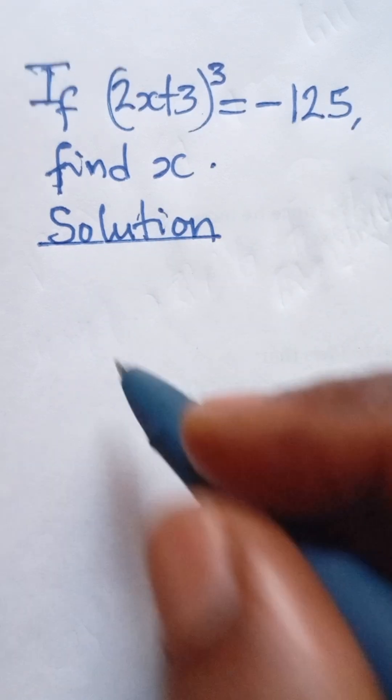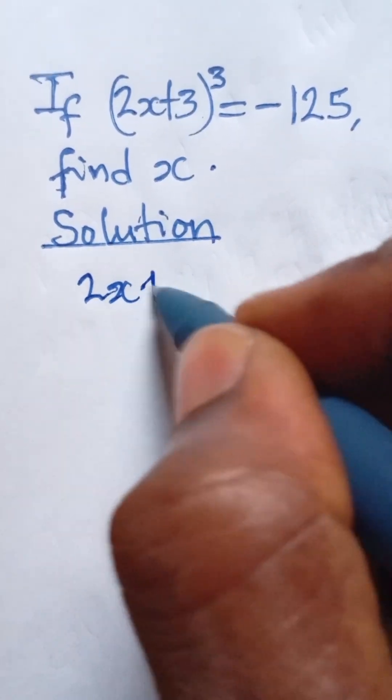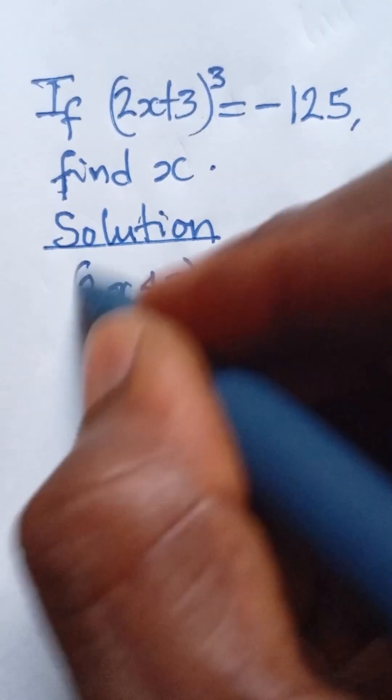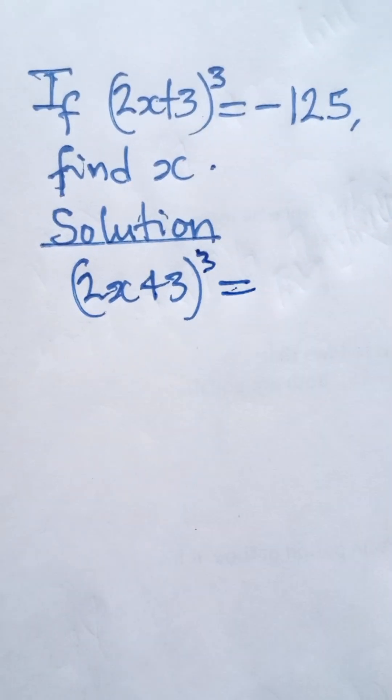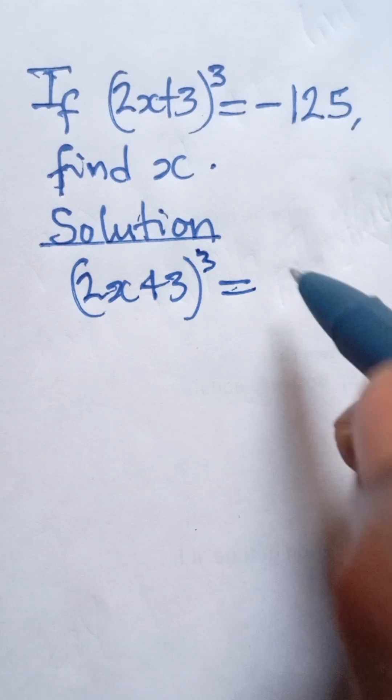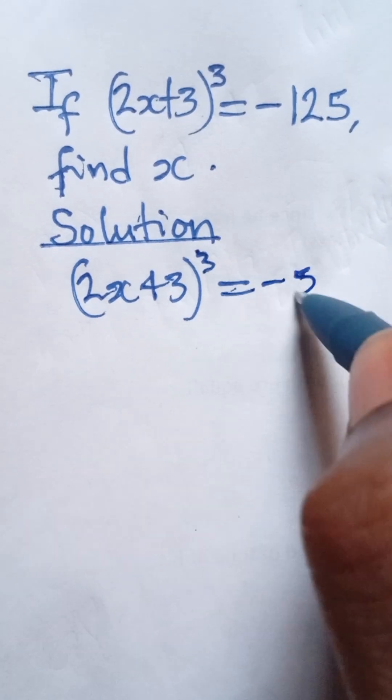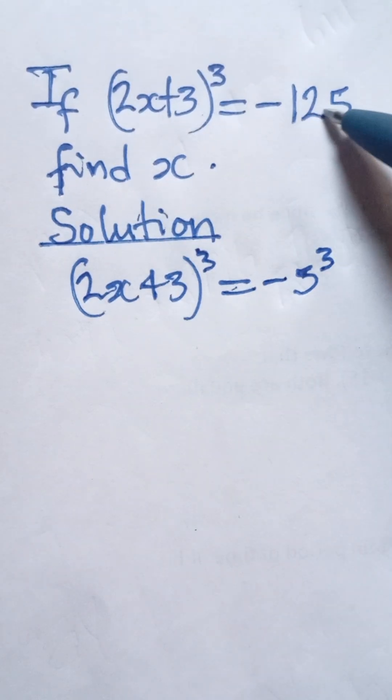Now, if we look at the right-hand part, which is negative 125, we will see that we can express it as a power of negative 5, as a base of negative 5. That means if we give negative 5 the power 3, or the exponent 3, it's going to give us minus 125.